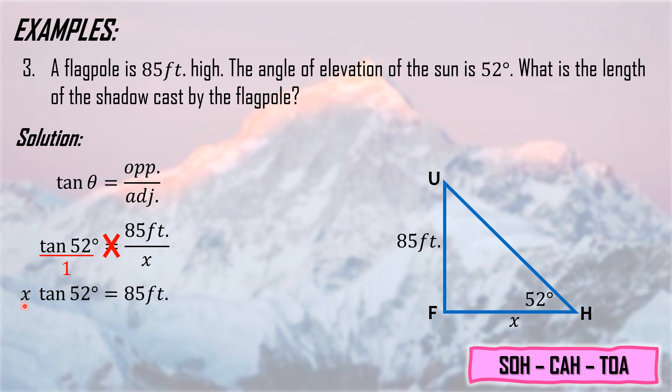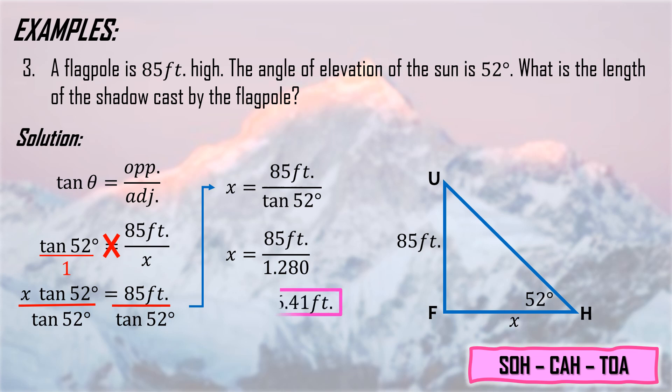Since we're finding the value of X, we need to cancel tangent 52 degrees. We divide both sides by tangent 52 degrees. This cancels tangent 52 on the left side, leaving only X. This becomes X equals 85 feet over tangent 52 degrees. Using your scientific calculator, press tan then 52. The value of tangent 52 degrees is 1.280 when rounded to 3 decimal places. Then divide: 85 divided by 1.280. The value of X is 66.41 feet.